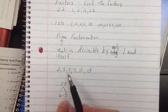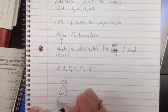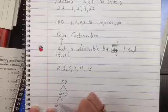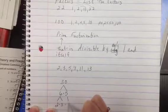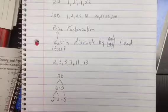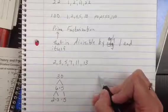But 6 is not, so I'm going to break up 6 into 2 times 3. I still have that 5. So my prime factorization for 30 is 2 times 3 times 5. I'm just going to do one more example and then we're done.